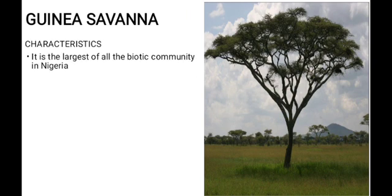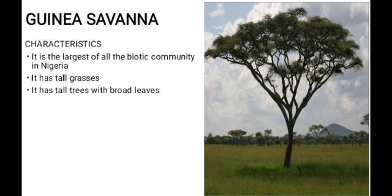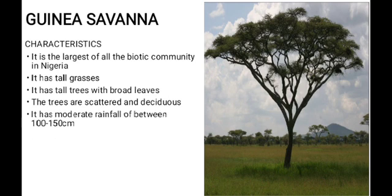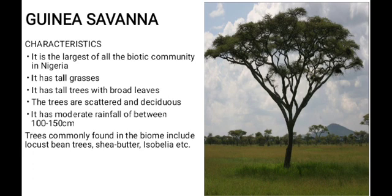The Guinea savannah is the largest biotic community in Nigeria, covering the major area of the Nigerian map. It has tall grasses and tall trees with broad leaves. The trees are scattered and deciduous — they shed their leaves during the dry season. It receives moderate rainfall of between 100 to 150 centimeters per annum. Trees commonly found here include locust bean, shea butter, and Isoberlinia, among others.